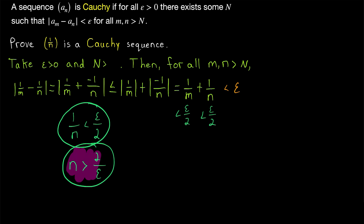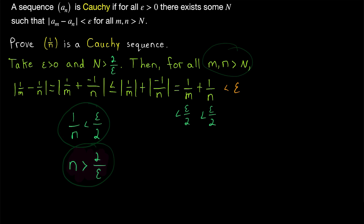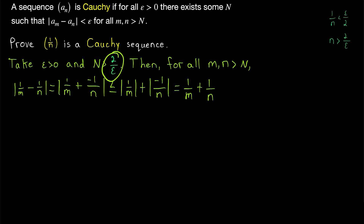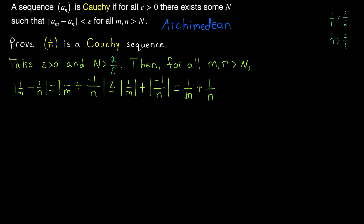This is the type of condition we want, because we can make m and n as big as we like. So if we take big N to be greater than 2 over epsilon, then taking m and n greater than big N will give us this condition. Now, 2 over epsilon might be really big — how do we know we can find a natural number big N greater than 2 over epsilon? That is a result of the Archimedean principle. I'll leave a link to my lesson on that in the description. It guarantees us that for any real number, we can find a bigger natural number.